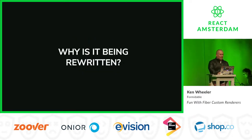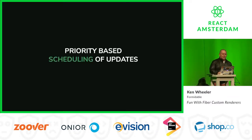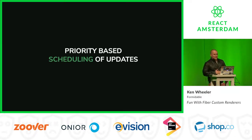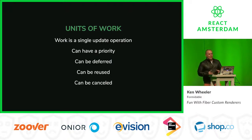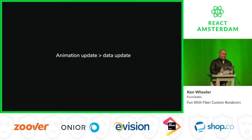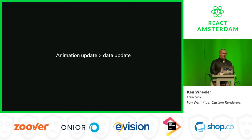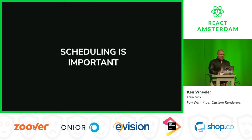So why are we rewriting it? It's being rewritten to allow for priority-based scheduling of updates. Each individual update operation is called a unit of work, and in Fiber they can have a priority — they can be deferred, reused, and canceled. For example, you could prioritize an animation update over a data update to increase performance — something you can't currently do. Scheduling is important, and I'll prove it.